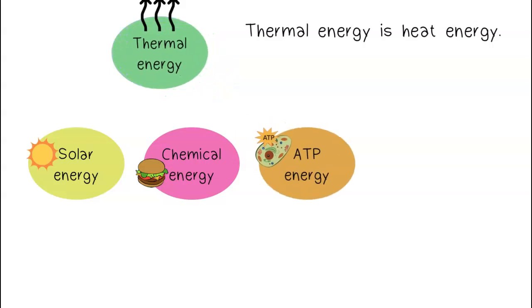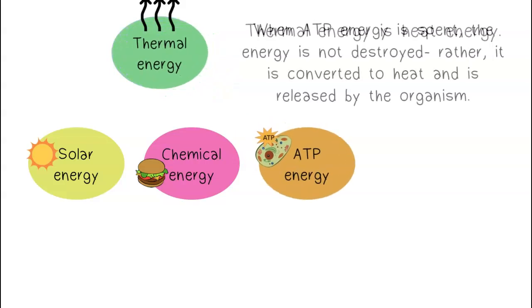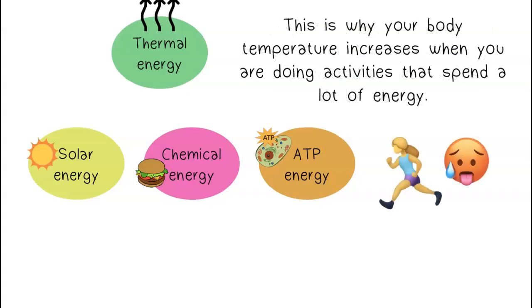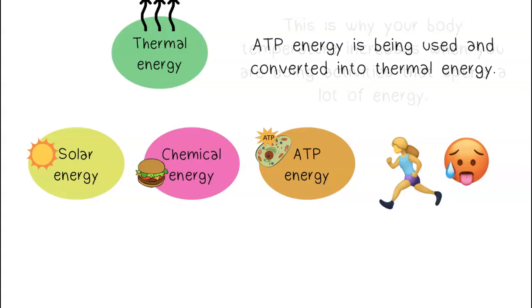Thermal energy is heat energy. When ATP energy is spent, the energy is not destroyed. Rather, it is converted to heat and it is released by the organism. This is why your body temperature increases when you are doing activities that spend a lot of energy. ATP energy is being used and converted into thermal energy.